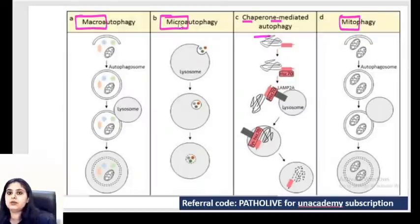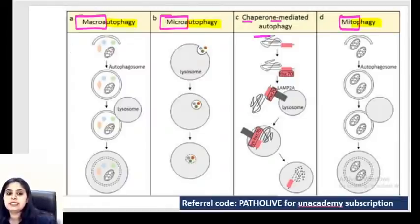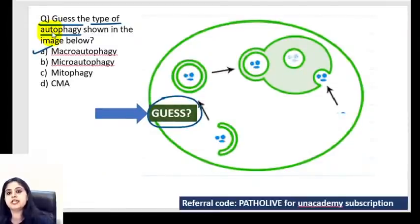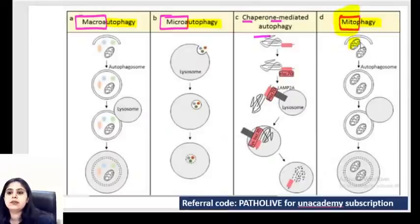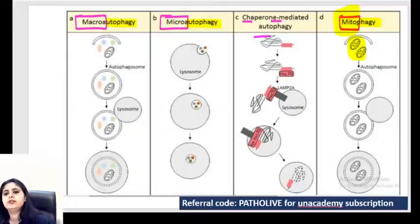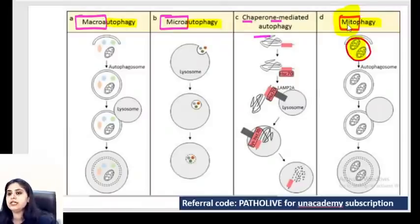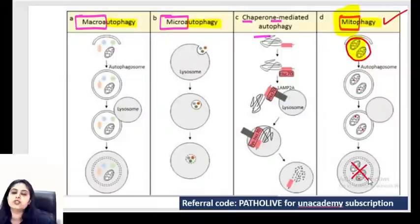We're eating our own mitochondria, ribosomes, everything. When you're only eating mitochondria, that's mitophagy. If you were only eating ribosomes, that would be ribophagy. So if the image shows only mitochondria being eaten - that's mitophagy. Mark that one. Now for macro versus micro autophagy, I have a story.